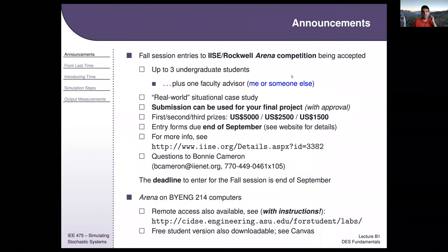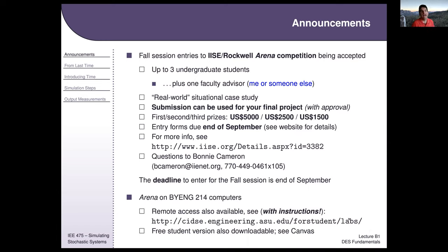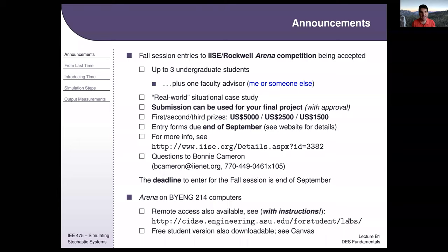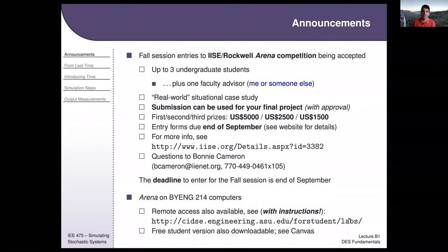There's an arena competition available as an alternative to your final project. For the Brickyard computers, you can access them remotely. For those who have had sluggishness in the past, they have upgraded the hardware and virtual machines. You should get very similar speeds to being in person. When you connect remotely, it gets the same resources as a local machine in its entirety, so as long as you've got good bandwidth, you should get good access.